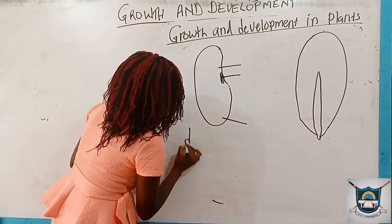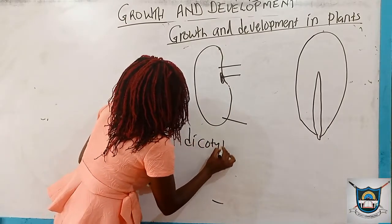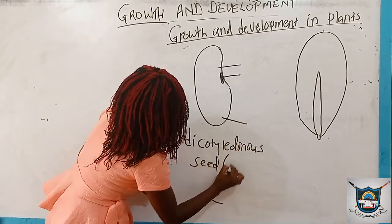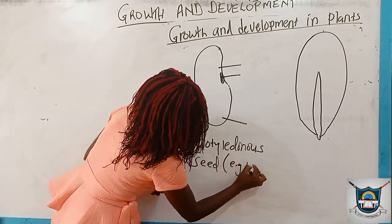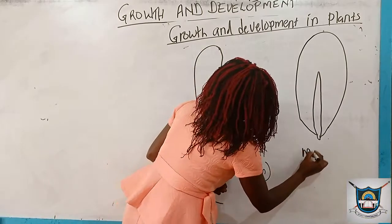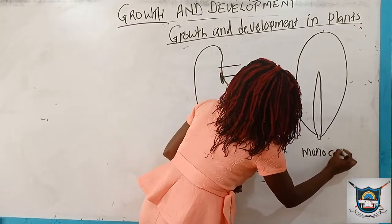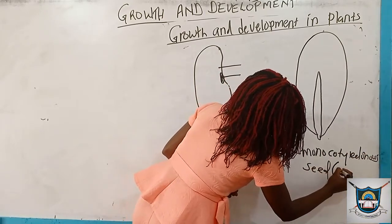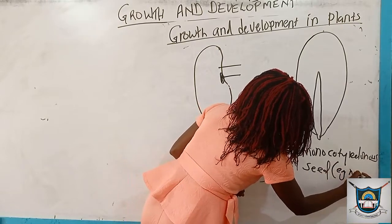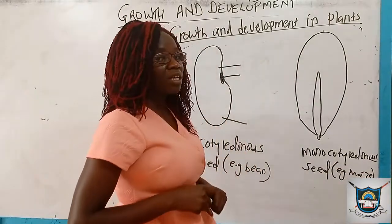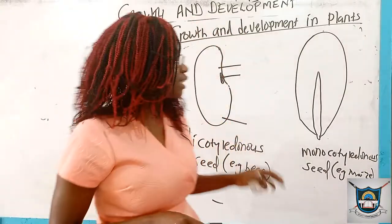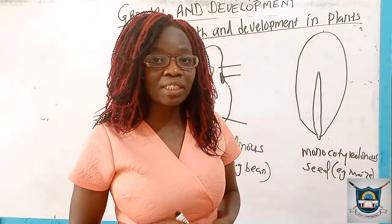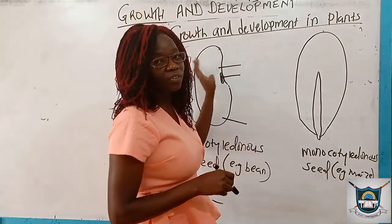This is the dicotyledonous seed — for example, the bean. And this is the monocotyledonous seed — for example, maize. In maize we have an endosperm, but in beans we don't have the endosperm, and therefore the bean seed is usually swollen because it stores food in the cotyledons.